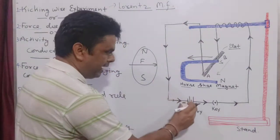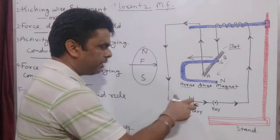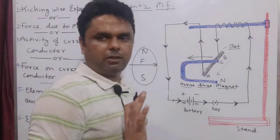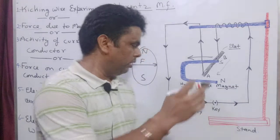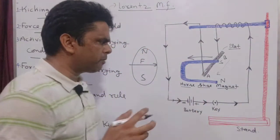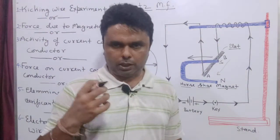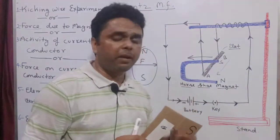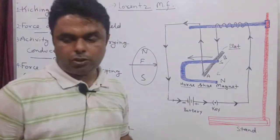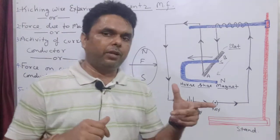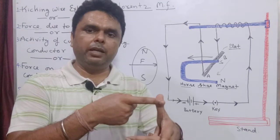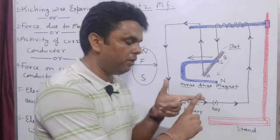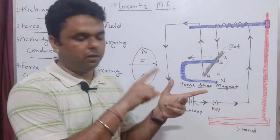The second possible case is that we can also reverse the battery terminals — making the positive terminal go where the negative was, and vice versa — while keeping the rest of the arrangement the same. In that case also, the direction of force will be reversed. So these are the two cases possible for getting a reversed direction of kick.